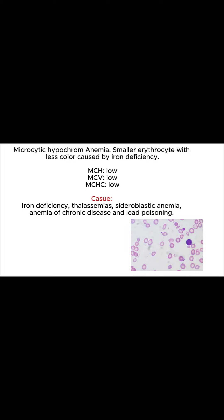Microcytic anemia appears when MCV and MCHC are low, meaning the erythrocytes are smaller in size than usual, caused by the small amount of hemoglobin present in the cell. Microcytic anemia is caused by multiple conditions such as iron deficiency, thalassemia — which affects the production of erythrocytes and their hemoglobin — and sideroblastic anemia, which leads to abnormal production of erythrocytes in the bone marrow.